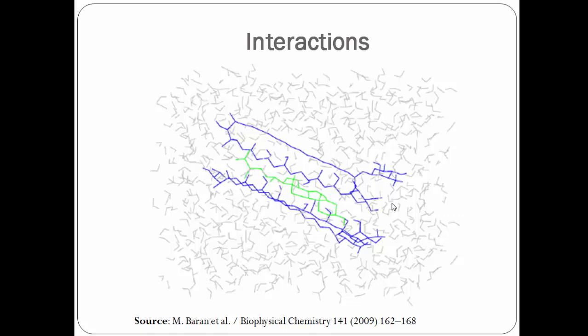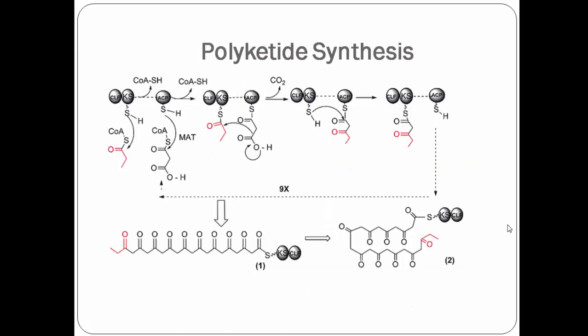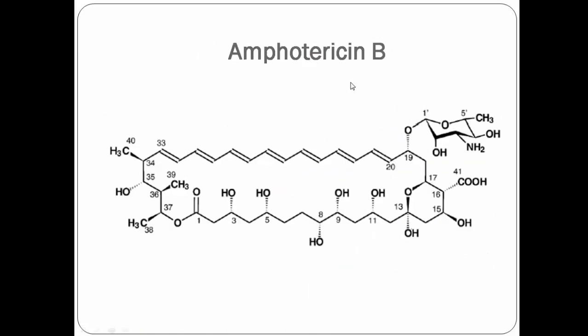This interaction occurs through van der Waals and electrostatic non-covalent interactions. The Amphotericin B–to–Amphotericin B interaction is actually stronger than the Amphotericin B–to–ergosterol interaction, because the surface area of the Amphotericin B molecule is larger than that of ergosterol. Additionally, the Amphotericin B structure itself is amphipathic in nature — it can act as an acid or a base — with more polar groups on the inside and more hydrophobic groups on the outside.